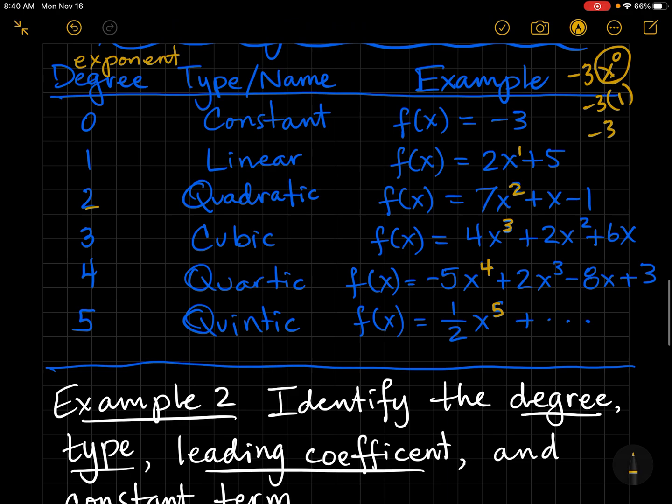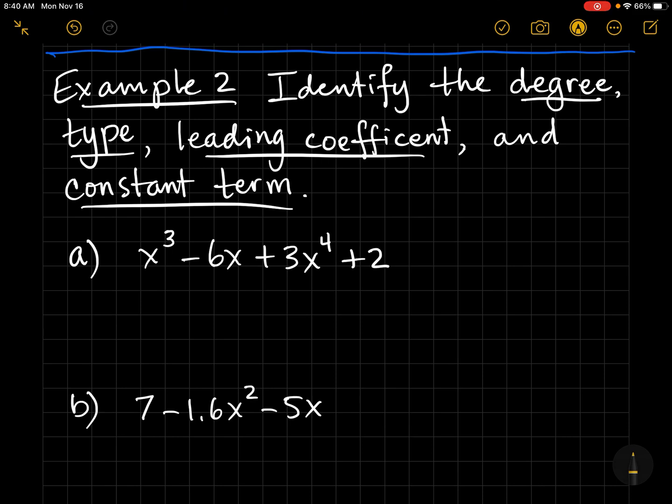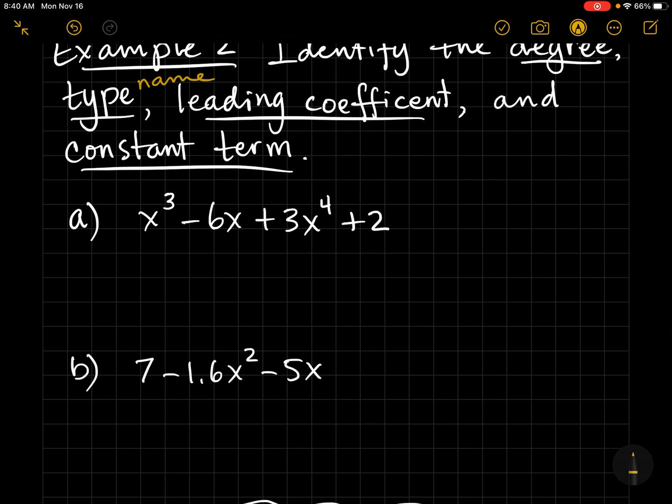In example two, let's identify the degree, the type, which is also called the name, the leading coefficient, and the constant term. So, if we look at this polynomial in part A, the first thing I want to do is put it in standard form, starting with the highest exponent, and going on down. And now I'm going to answer the questions. The degree would be four.